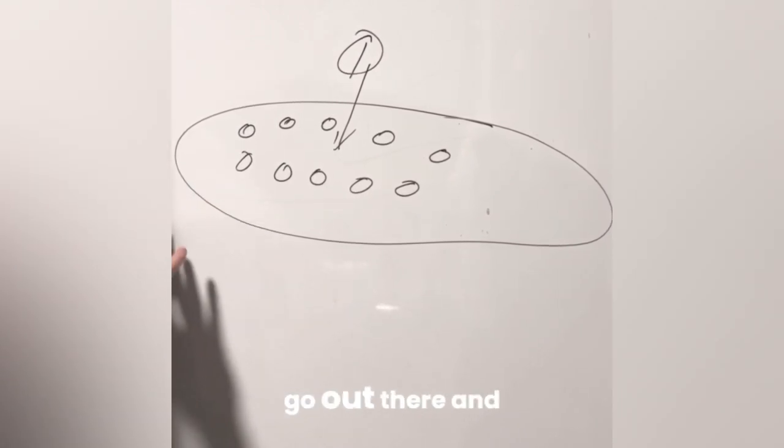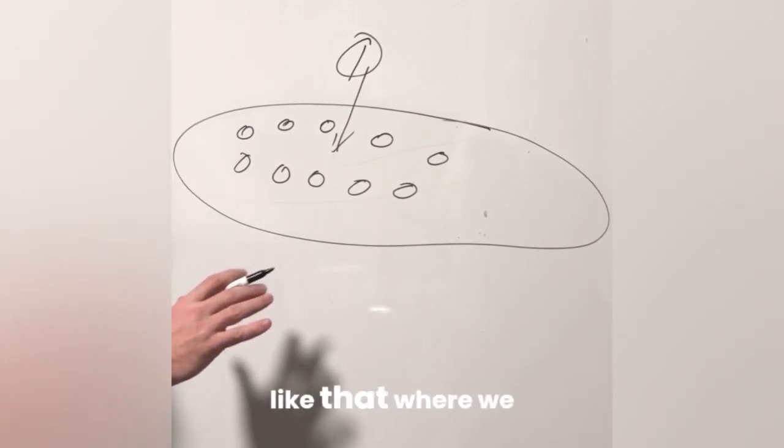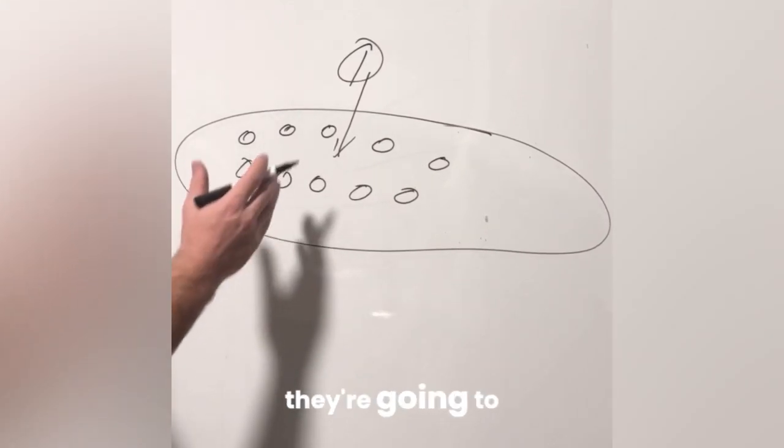When we just go out there and spray them on dead, bare soil, let's say in an almond orchard or something like that, where we have no living root systems, they're going to struggle to survive.